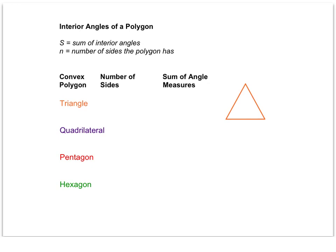So we'll start by filling in some information that we know. We know a triangle has three sides, and we know that any triangle is always going to have the sum of its angle measures equal 180 degrees.